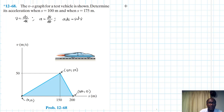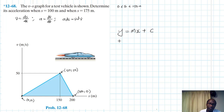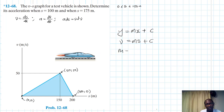In the interval s = 0 to 150 meters, we are going to use the linear equation v = mx + c, where m is the gradient and x is position, plus the intercept. And m itself is just equal to the change in v divided by the change in s.